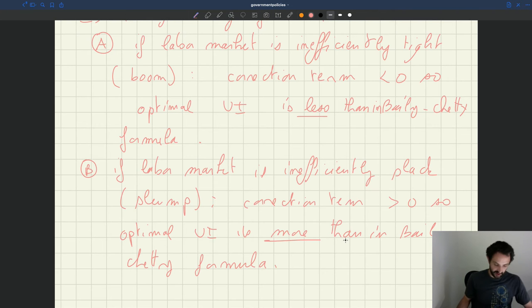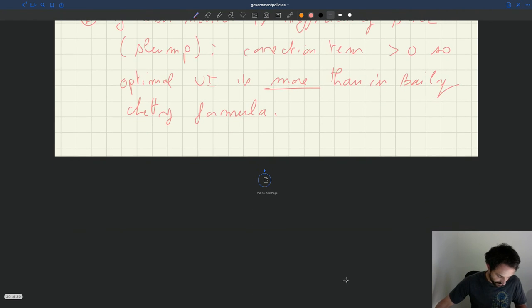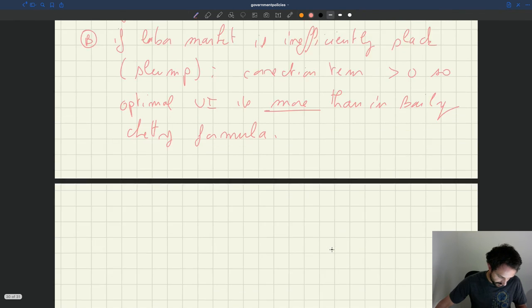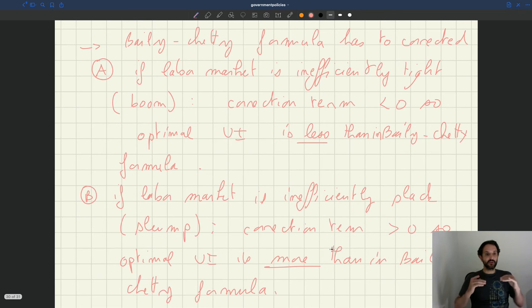And so in a situation like this, what we have is that in good times, you want less UI than in Bailey-Chetty. In bad times, you want more UI than in Bailey-Chetty. So you can see that in this framework, basically, as you alternate over the business cycle between good times and bad times, your UI is also going to alternate. In good times, UI will tend to be low. In bad times, UI will tend to be high.